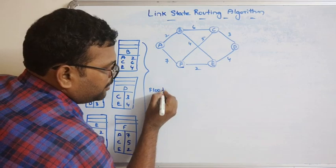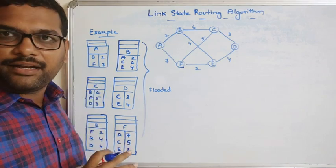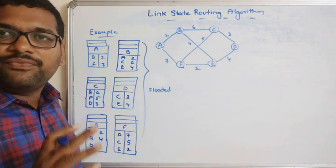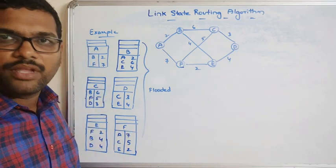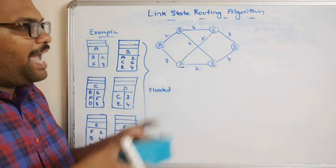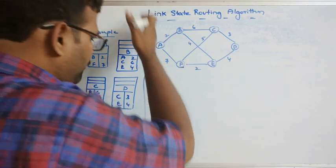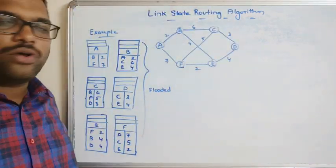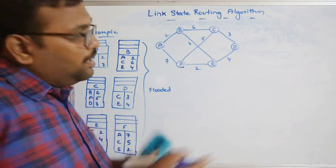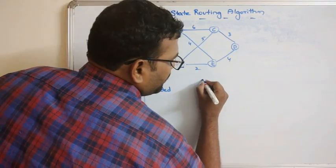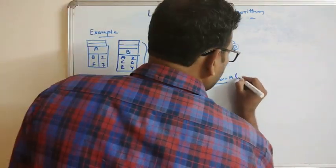All these are the link state tables of each and every router. These link state tables will be flooded throughout the network. The sequence number is used to consider the recently sent packet, and TTL is used to avoid infinite flooding — if TTL is zero or less than zero, the packet should not be flooded further. After flooding, every router will have complete knowledge of every other router's link state table. A, B, C, D, E, and F will all have the complete link state tables. Now every router follows Dijkstra's algorithm to find the shortest path.